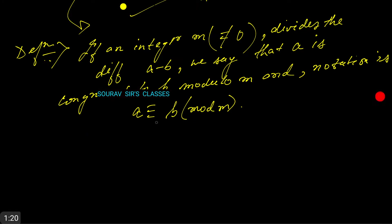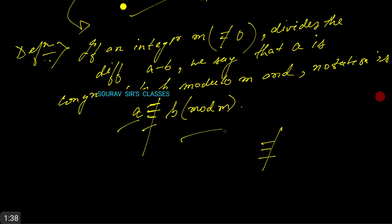If m does not divide the difference, we say that a is not congruent to b modulo m. This is the symbol for congruency and this is the symbol for not congruent to: a ≢ b (mod m).